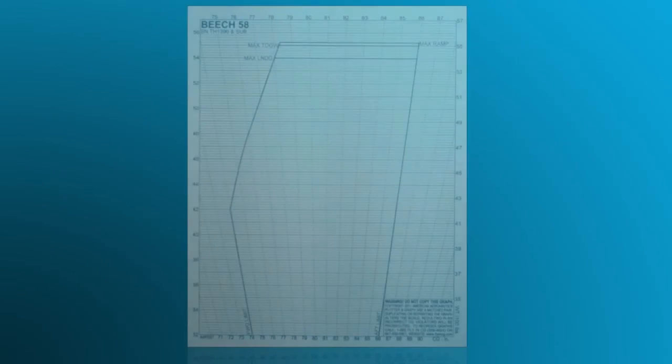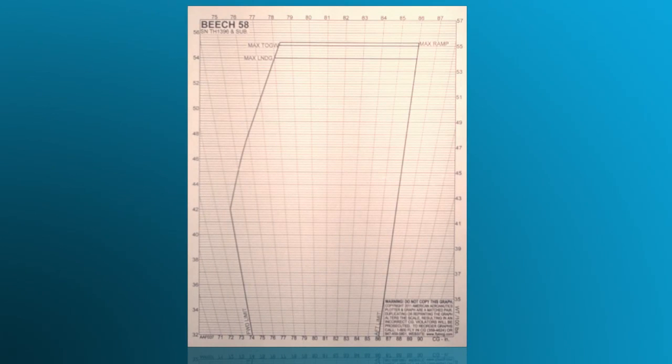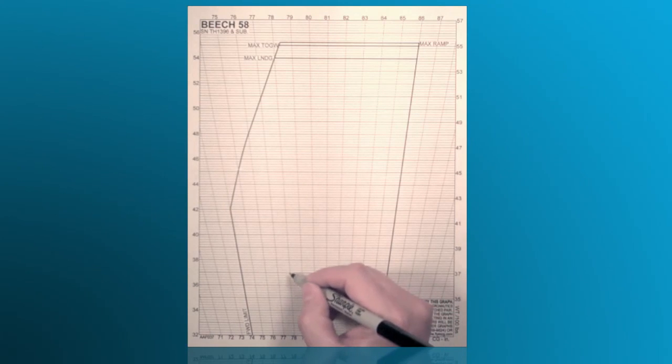Let's begin our computation by plotting our basic empty weight and CG for our aircraft. For our example, we'll use 3,600 pounds at 78 inches. We'll make a dot right where those two lines intersect on the graph.